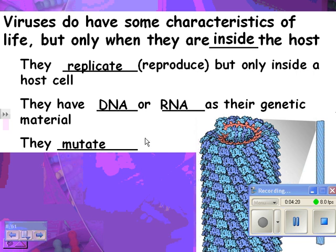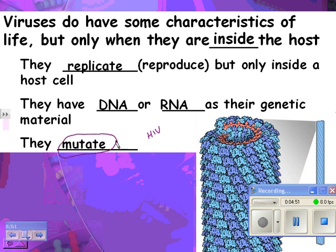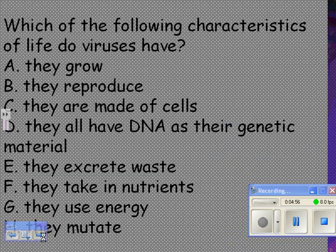Viruses also mutate, and that's one of the huge problems with HIV. The virus that causes AIDS is really bad at replicating itself — it affects your white blood cells, which are the things that should be attacking viruses and pathogens. HIV is lousy at copying its genetic material, so it makes a lot of mutations, meaning it's always changing and it's hard to get a drug that can kill it.